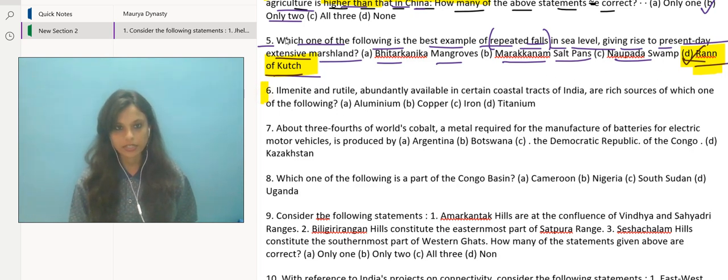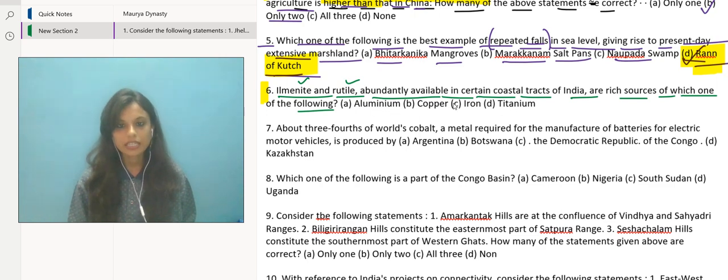Now let us move over to the next question. Ilmenite and rutile, abundantly available in certain coastal tracts of India, are rich sources of which one of the following? Ilmenite and rutile which are abundantly available in certain coastal tracts of India are rich sources of titanium. This is your correct answer, that is option D.